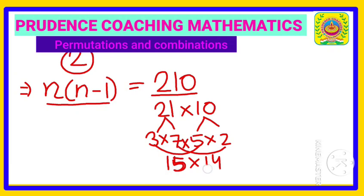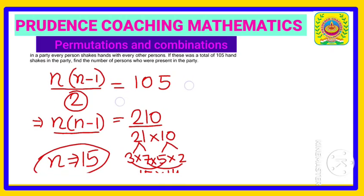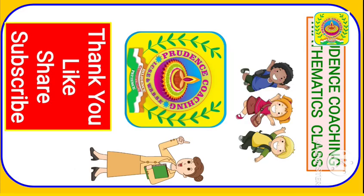So if the bigger number is n, that is 15, and this is 15 minus 1, 14, that means here the value of n is 15. So you can find out the answer like this. How many persons are there in the party? Yes, 15 persons are there in the party. This is your final answer. Thank you.